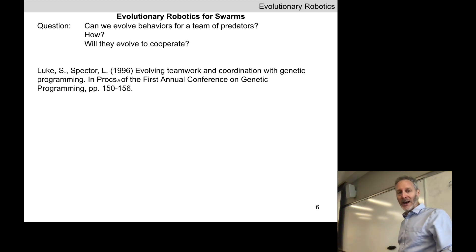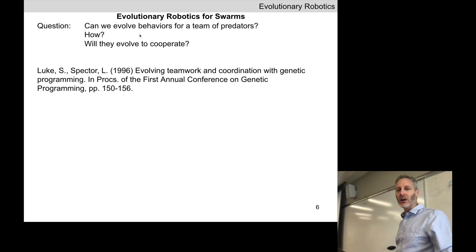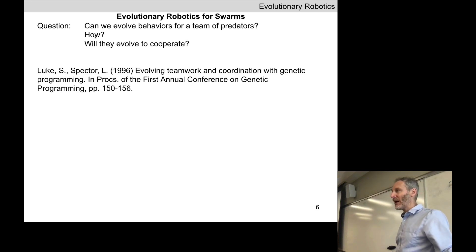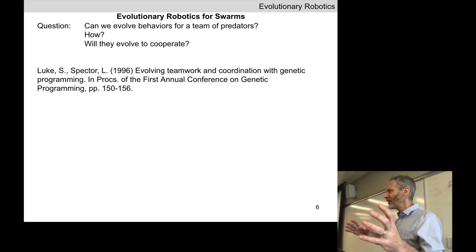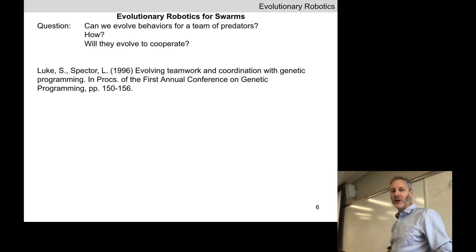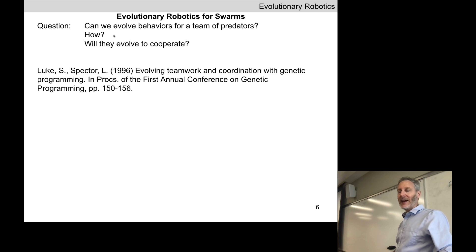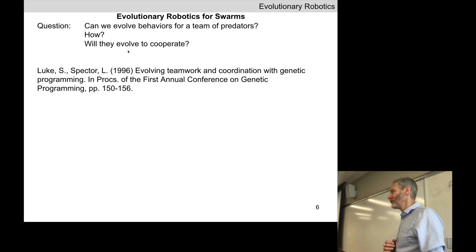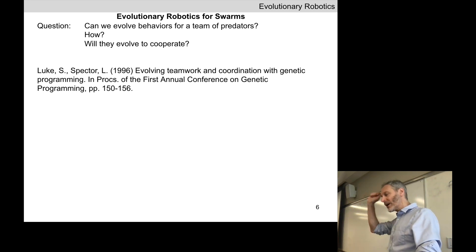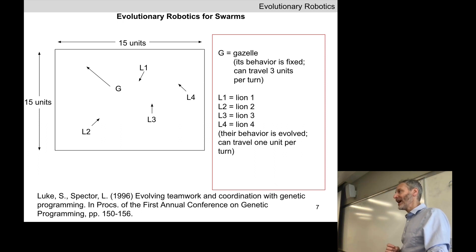In this experiment, the two investigators asked three key questions: First, can we evolve behaviors for a team of predators to work together — what design decisions about the evolutionary algorithm, fitness function, mutation, selection, and crossover facilitate evolving collective behavior? Second, if we evolve collective behavior, do they evolve to cooperate? Third, if they cooperate, how did they evolve to do so? So, let's put on our pith helmets and head out on the virtual Serengeti.